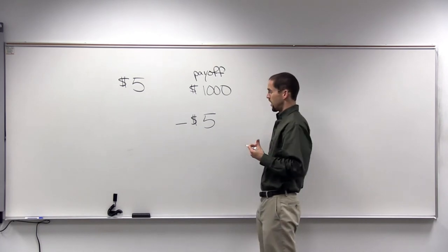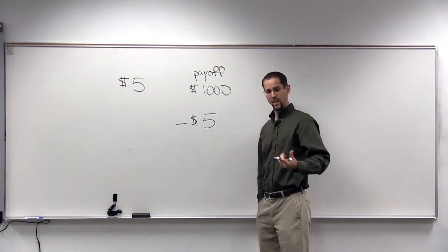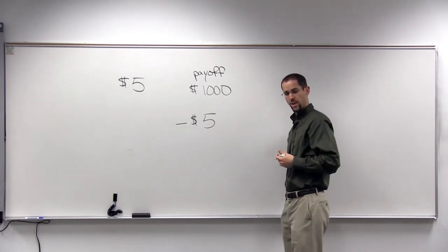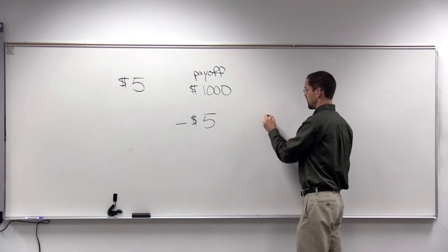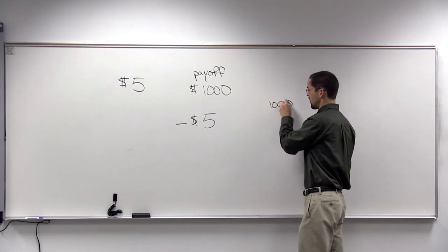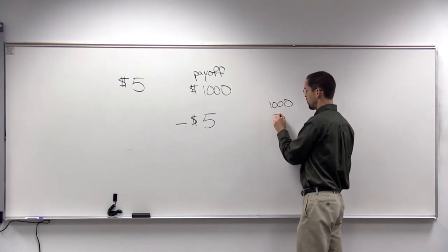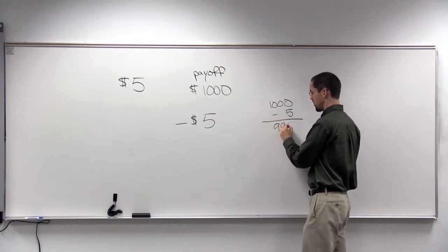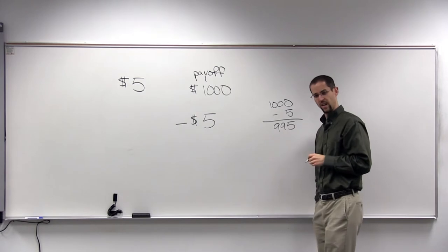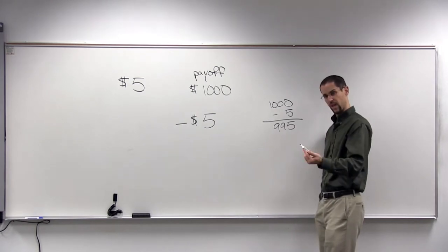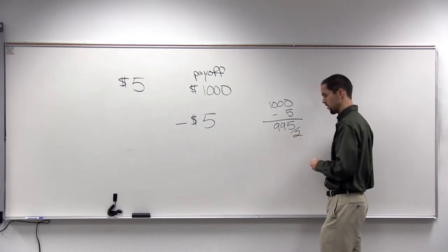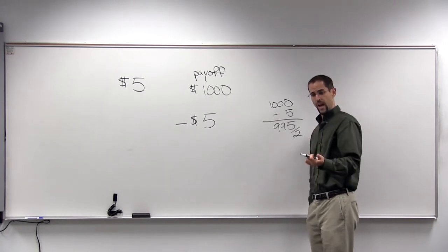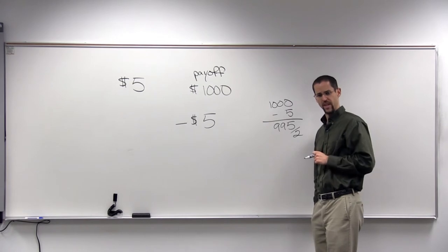If you had an equal chance of winning and losing, you could play once today and lose and play once tomorrow and win. You would win $1,000 and lose $5, and you would have a total of $995. On average, you've played twice. So you would have almost $500 per play of the lottery if you did that.